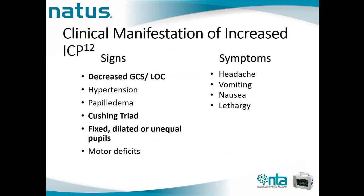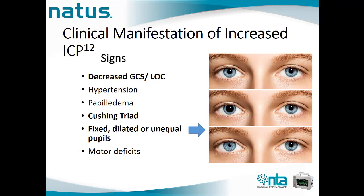If ICP suddenly increases, we need to know the signs and symptoms. These include sudden decrease in GCS or level of consciousness, sudden hypertension, bradycardia, hypertension related to headache or discomfort, Cushing's triad — which I will address next as a very late sign — sudden change in pupil size, fixed dilated or unequal pupils, sudden motor deficits, patient complaint of headache, sudden vomiting especially projectile vomiting, and nuchal rigidity. We must be aware of unequal and dilated pupils. Regular neurological assessment is essential.